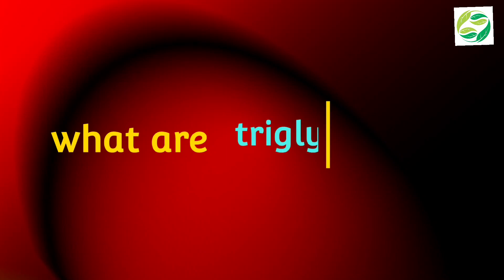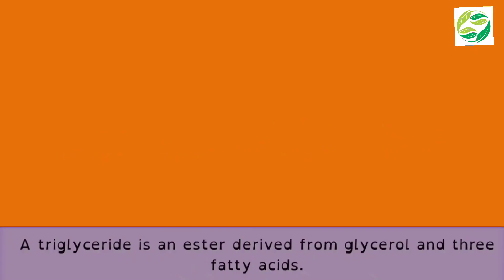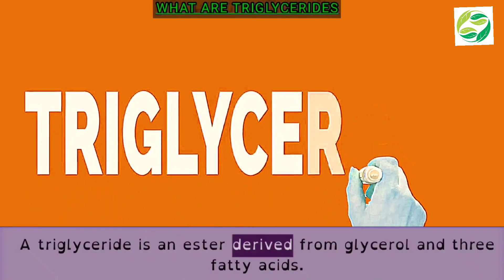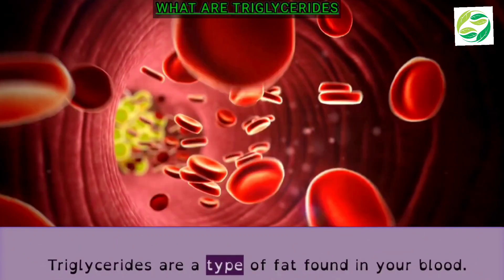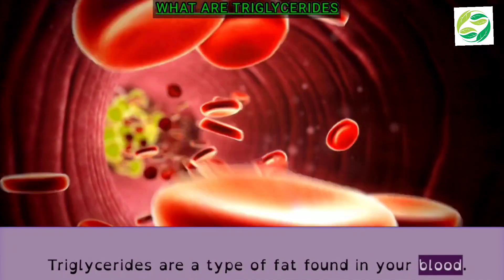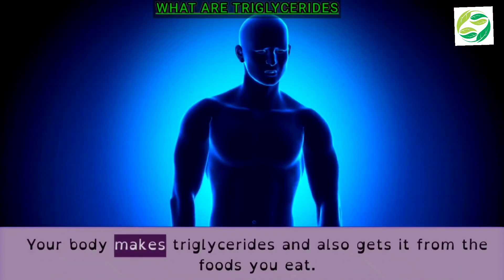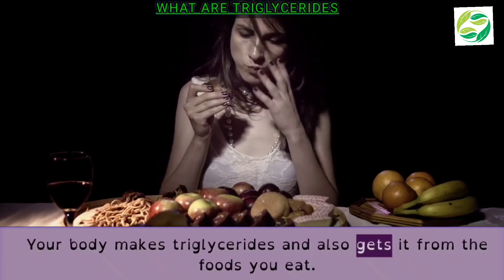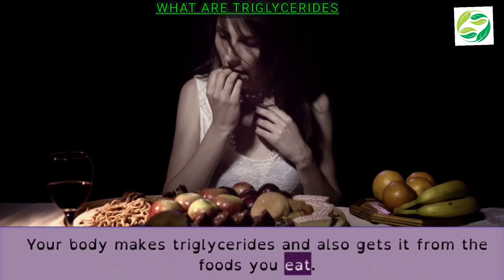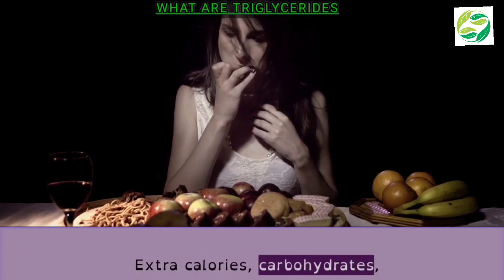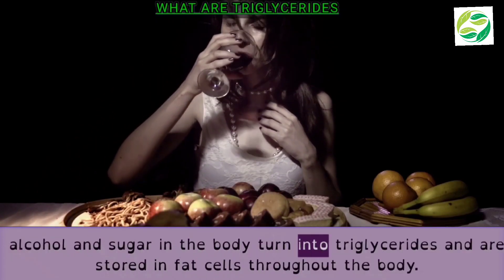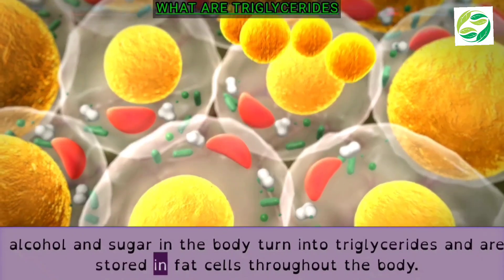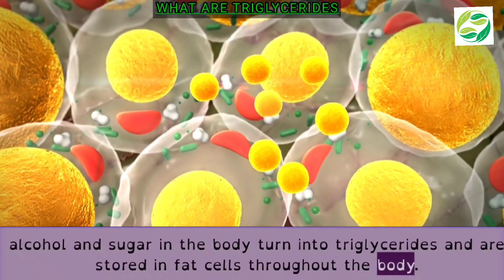What are triglycerides? A triglyceride is an ester derived from glycerol and three fatty acids. Triglycerides are a type of fat found in your blood. Your body makes triglycerides and also gets them from the foods you eat. Extra calories, carbohydrates, alcohol, and sugar in the body turn into triglycerides and are stored in fat cells throughout the body.